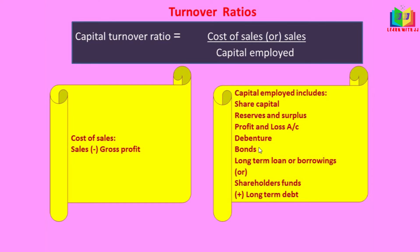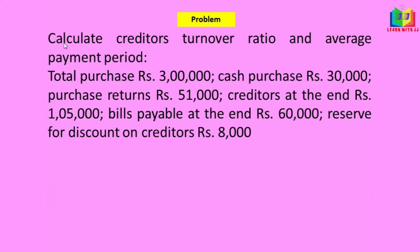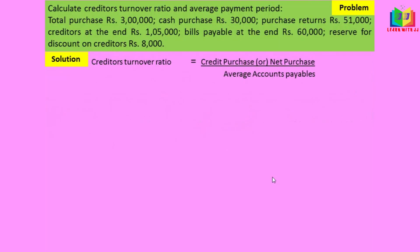Now we'll see a problem: calculate creditor turnover ratio and average payment period. Total purchases: 3 lakh; cash purchases: 30,000; purchase returns: 51,000; creditors at end: 1 lakh 5,000; bills payable at end: 60,000; reserve for discount on creditors: 8,000. We need to find the credit purchase from total purchase, and the reserve for discount on creditors will not be included.